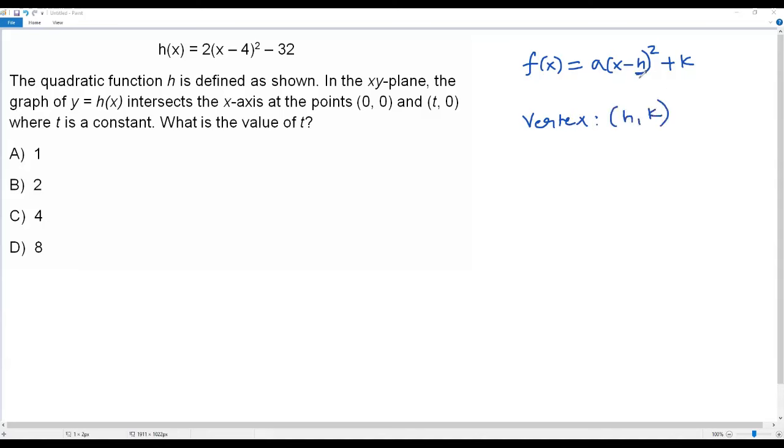The value that we have subtracted from x is the x-coordinate of the vertex, and the value that we have at the place of k is the y-coordinate of the vertex.